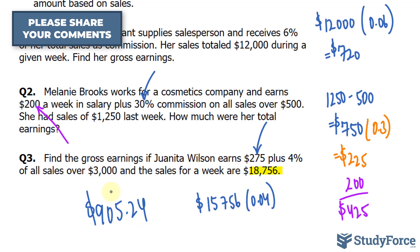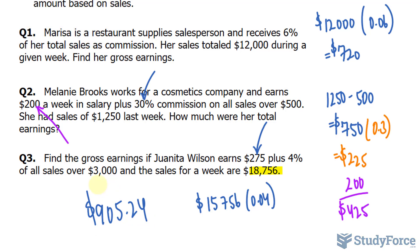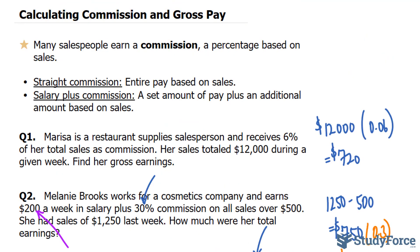Remember the difference between gross and net. Gross is what she earned before all the deductions, such as taxes or other withholdings. So her net pay will obviously be less than this when she receives her paycheck. That is how to calculate commission and gross pay. If you have any questions, please leave a comment below or visit our website at biology-forums.com.